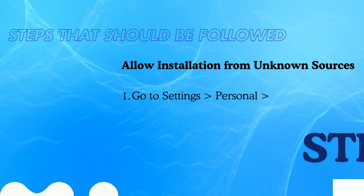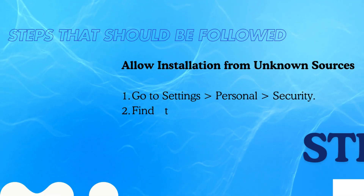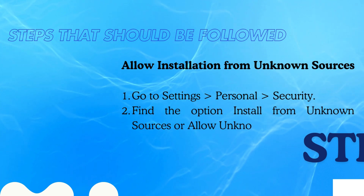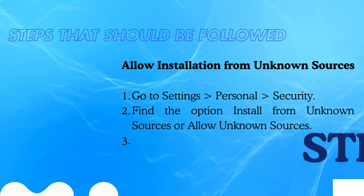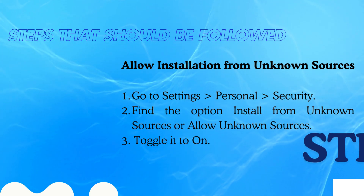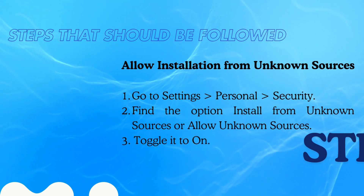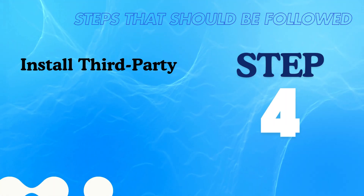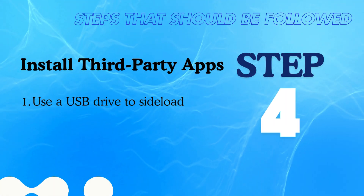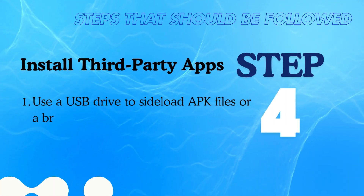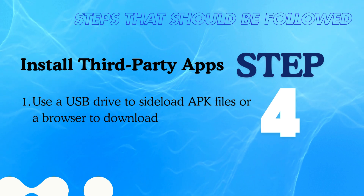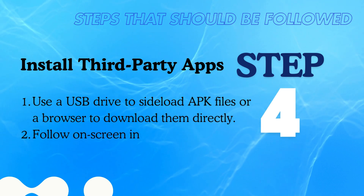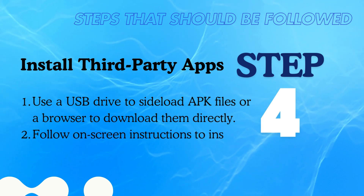Go to Settings > Personal > Security, find the option 'Install from unknown sources' or 'Allow unknown sources,' and toggle it to on. To install third-party apps, use a USB drive to sideload APK files or use a browser to download them directly. Follow the on-screen instructions to install.